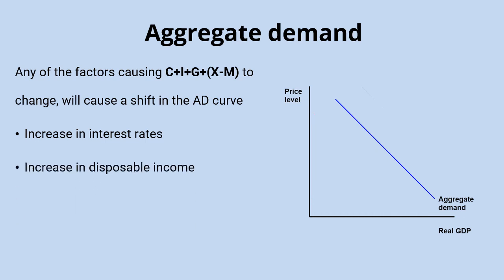If disposable income were to increase, that's a straightforward one — people have more money to spend and so consumption increases. You could also have a knock-on impact of rising business profits as a result of consumers spending more, and that might encourage further investment. Both of these effects mean aggregate demand would rise and the curve shifts to the right.